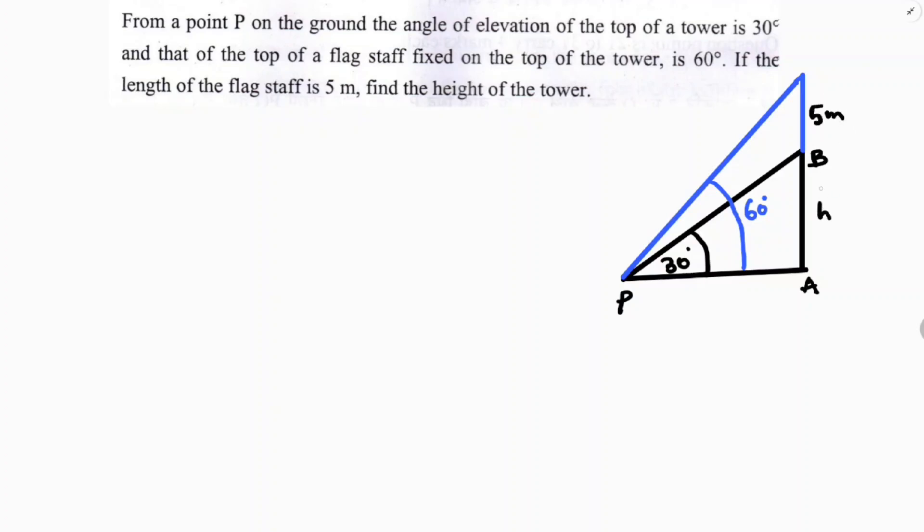We need to find the height of the tower. So, I will consider the base size like x meters. We need to find AB. So, the total will be here like h plus 5.